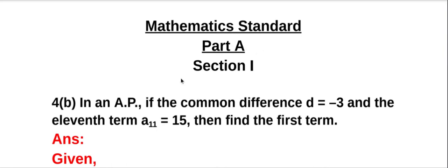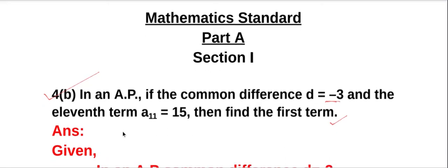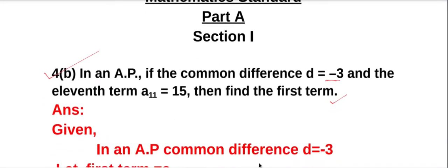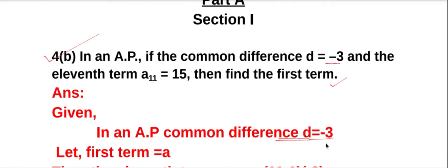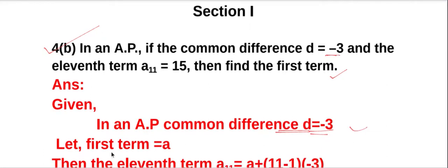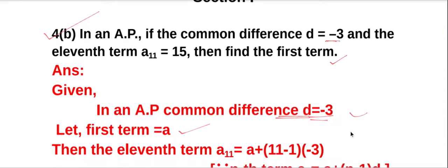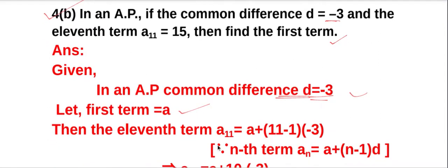Mathematics standard, Part I, Section 1, Question 4b. In an AP, if the common difference d equals minus 3 and the 11th term a₁₁ equals 15, then find the first term. Given: common difference d equals minus 3. Let the first term be a. For the 11th term, we use the nth term formula.